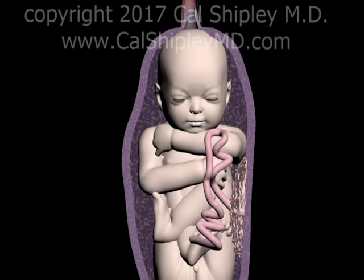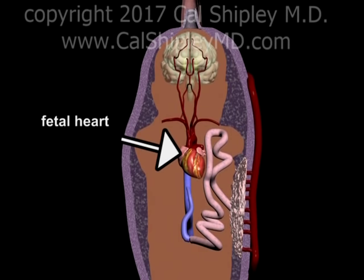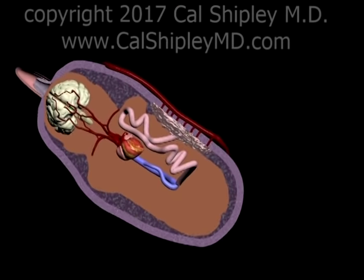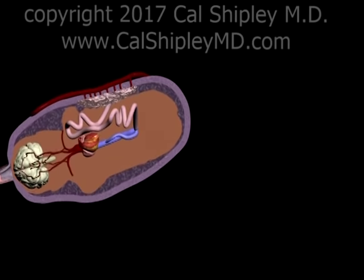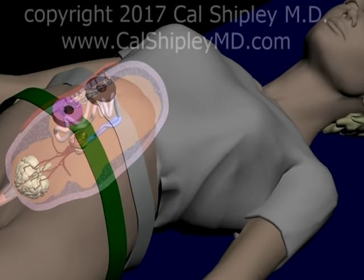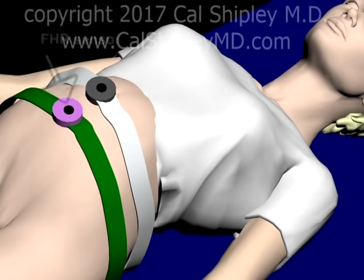Now let's take a look at how the non-stress test is performed and interpreted. Monitoring of the fetal heart rate during the non-stress test is achieved by using an external heart rate monitor. The monitor's sensor is attached to the mother's abdomen via a strap, as shown here.